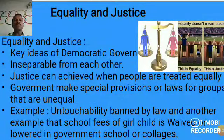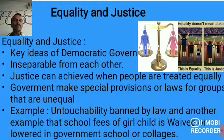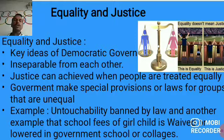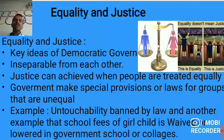Equality and justice are the key ideas of a democratic government, and they are inseparable from each other. Justice can be achieved when people are treated equally. The government makes special provisions and laws for groups that are disadvantaged. For example, untouchability is banned by law. Also, school fees for the girl child are waived or reduced in government schools and colleges. The government needs to uplift people who were not treated equally and provide equal access to the country's resources, as well as equal opportunity in government jobs.